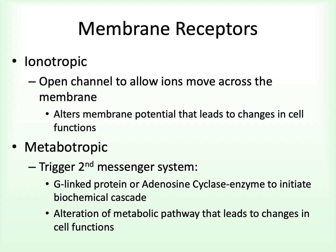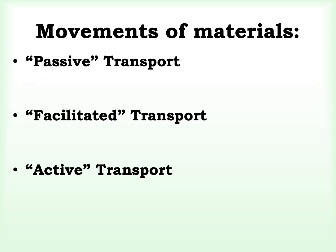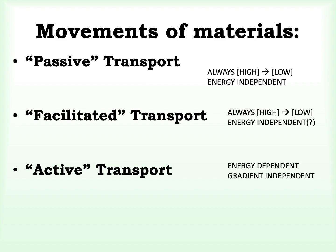One of the things the cell membrane is responsible for is creating a barrier for materials to come in and go out — a topic referred to as membrane transportation. Membrane transportation functions with the membrane receptors and integrated membrane proteins to establish what is referred to as membrane dynamics. Movement of materials across the membrane is classified as either passive or facilitated and active. In passive transportation, movement is always from an area of highest to lowest concentration and is energy independent, including osmosis and diffusion.